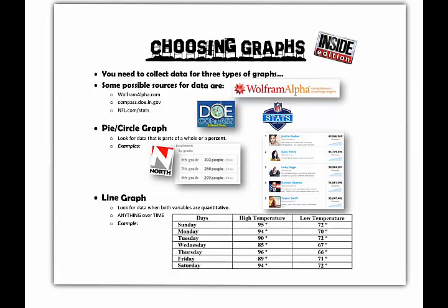We also talked about the possibility of using data from the top five Twitter followers. The whole is the Twitter followers for those top five people, and then the percentages are the number of followers that each of those people have.